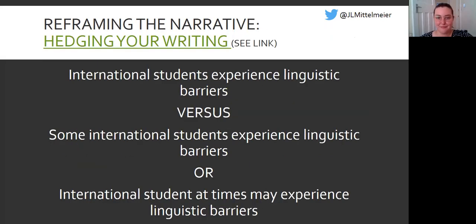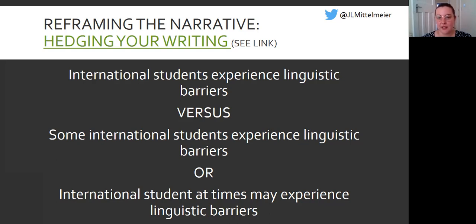Finally, and maybe the easiest suggestion, is to reflect on the way we're writing about international students. One simple consideration is the use of hedging — adding that tiny recognition that experiences do not represent all individuals. I often see writing where authors say 'international students face linguistic barriers,' which is such a wide sweeping statement implying all international students always experience barriers. Just by adding a few words like 'some international students may at times experience,' we can show our recognition that barriers at times exist but don't always apply to all individuals or in all circumstances.